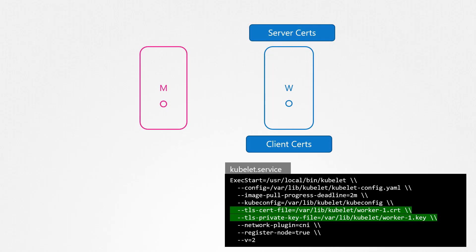So who is a client and why would they connect to the Kubelet? As of now, the only client that connects to the Kubelet is the kube API server itself, to monitor the state of the node as well as to pull logs of pods running on the worker node when you run the kubectl logs command, or when you try to execute a command on a pod on the worker node using the kubectl exec command.